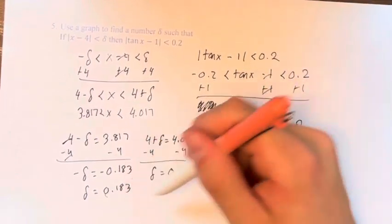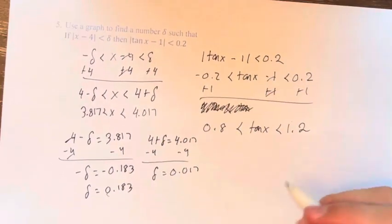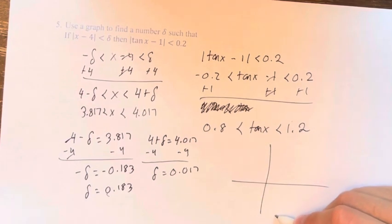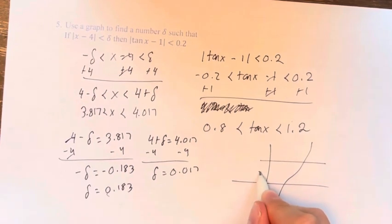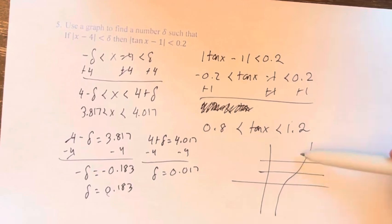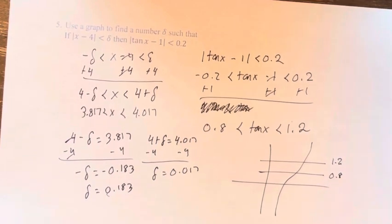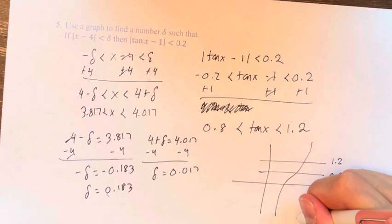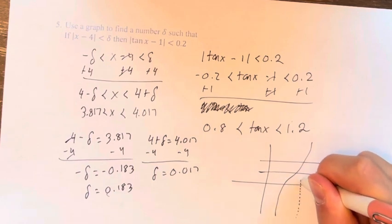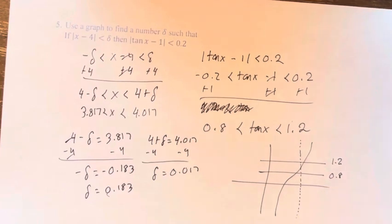So which of these is the actual delta? So drawing for a second what the graph basically looked like, we had everything like here, and here, and here, were the values in which we needed to stay within 1.2 and 0.8. And here, we had x is equal to 4. And it was really, really close to 1.2, and it was further from 0.8.